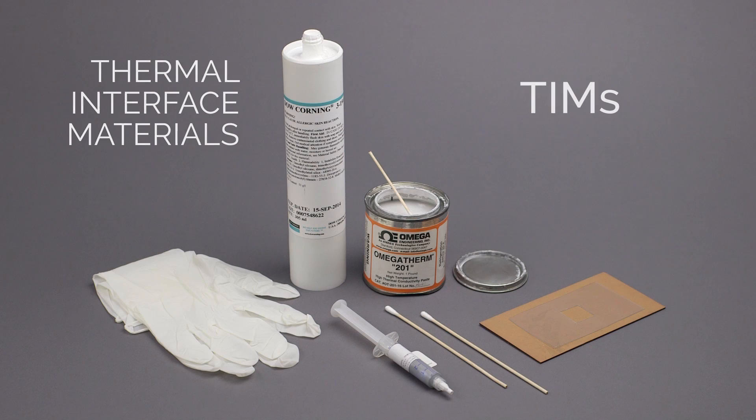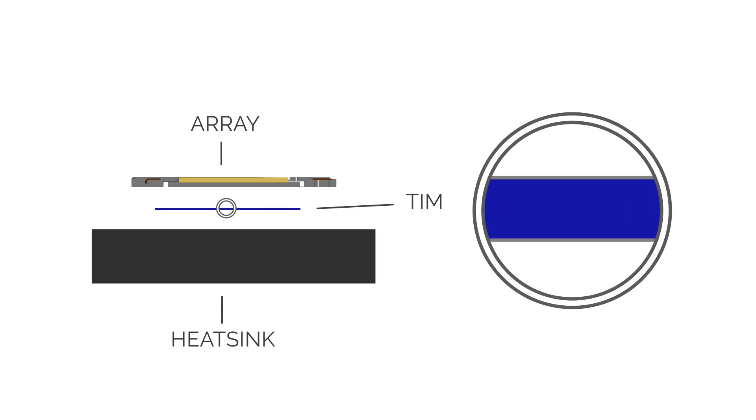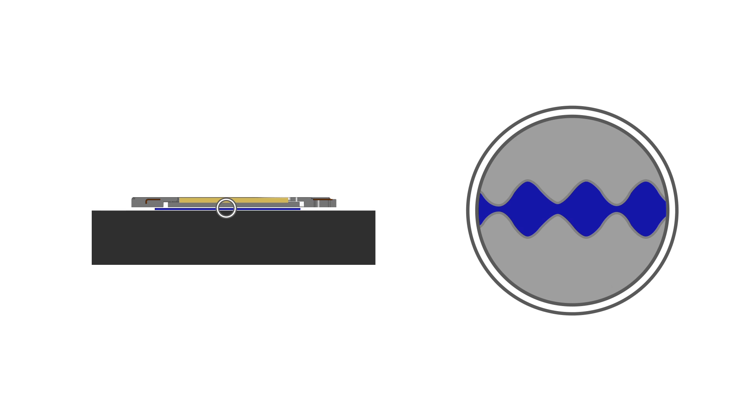Thermal Interface Materials or TIMs are used to ensure a strong thermal connection between the LED array substrate and the heat sink or fixture. The use of TIMs protects from manufacturing deficiencies like substrate warpage and heat sink flatness.